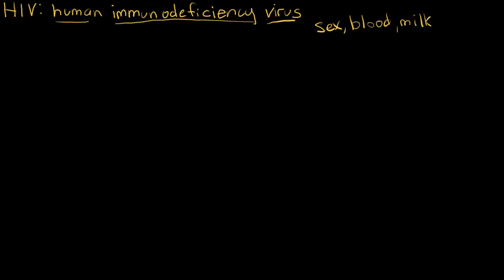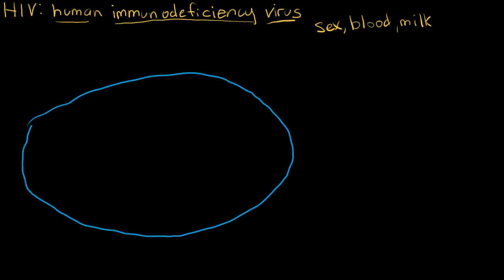Let's look at how HIV can infect a living cell. I'll draw a cell with a nucleus, and inside the nucleus there's human DNA. This type of cell is a CD4 positive T cell — a very important cell of the immune system. There are many steps by which HIV infects the cell and reproduces, but I'll focus on the major concepts. It may be helpful to review cellular organelles or protein synthesis before continuing.